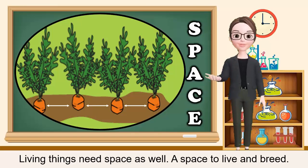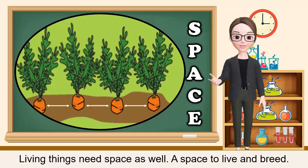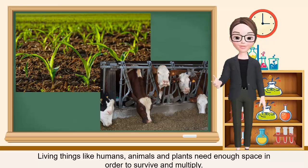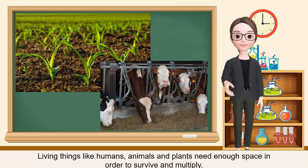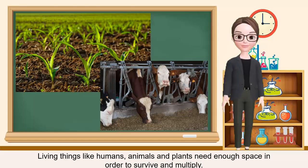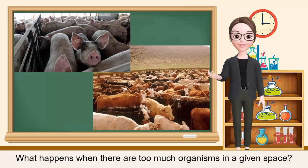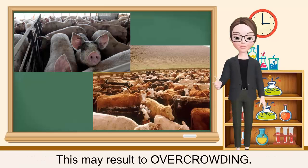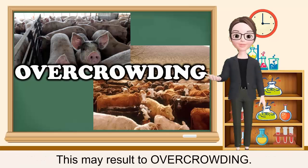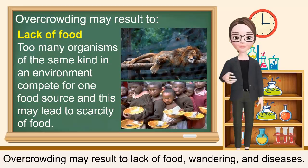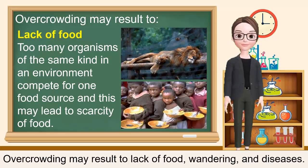Next is space. Living things need space as well — a space to live and breathe. Living things like humans, animals, and plants need enough space in order to survive and multiply. What happens when there are too many organisms in a given space? This may result in overcrowding. Overcrowding may result in lack of food, wandering, and diseases.